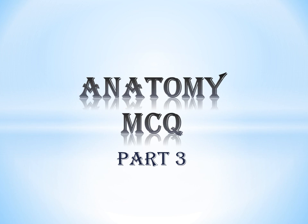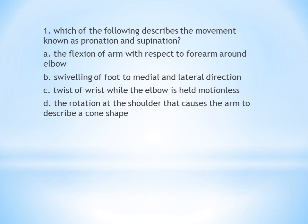First question: Which of the following describes the movement known as pronation and supination? A. The flexion of arm with respect to forearm around elbow. B. Swivelling of foot to medial and lateral direction. C. Twist of wrist while the elbow is held motionless. D. The rotation at the shoulder that causes the arm to describe a cone shape.